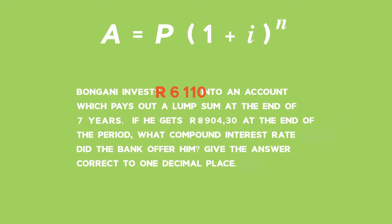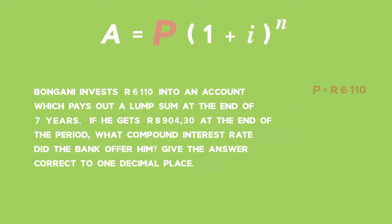6,110 rand is the value of P, your initial amount. N will be seven years. If he gets 8,904 rand and 30 cents at the end of the period, that's the final accumulated amount, and that is A. What compound interest rate does he get? What is i?